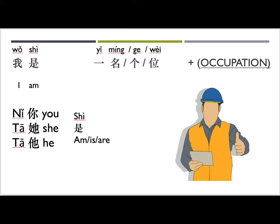Other pronouns include 你 (you), 她 (she), and 他 (he). Please note that there is no difference in pronunciation between he and she in Chinese, but when written they look different — they have different radicals on the side. Let's practice: 我是一名 / 一个 / 一位; 你是一名 / 一个 / 一位; 他是一名 / 一个 / 一位. Great job!